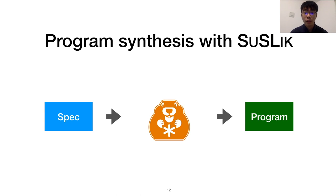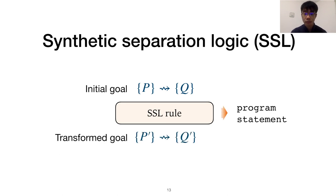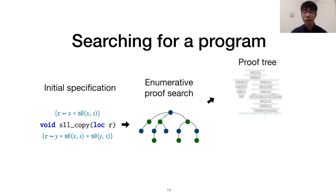To see how it could be done, let's understand how Syslic synthesizes programs from specifications. Syslic operates in the logical framework of synthetic separation logic, or SSL. An applied SSL rule transforms a synthesis goal into another one, while also emitting a residual program statement. Syslic synthesizes programs by enumerating the search space of SSL rules until the goal is reduced to a trivial entailment and a program is found as a byproduct.